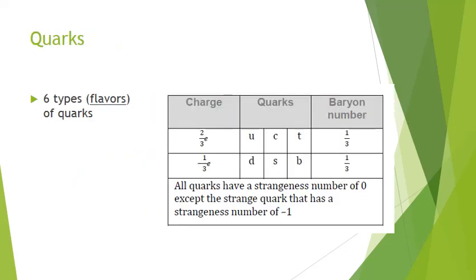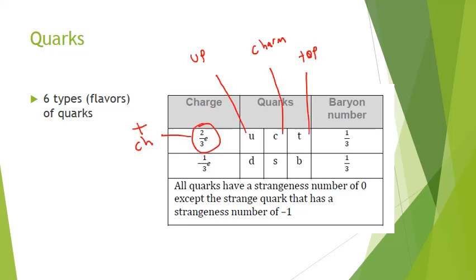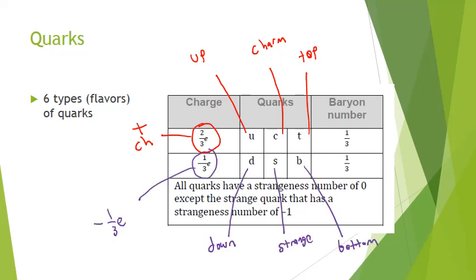On your equation sheet under the nuclear section — section 7.3 in the current curriculum — you actually have this table right in there, which is pretty awesome. There are six types of quarks: U (up quark), C (charm quark), and T (top quark), each with a charge of positive two-thirds E. Then the down quark, strange quark, and bottom quark, all with a charge of negative one-third E. Remember, E is the elementary charge, so one-third of that is one-third of the elementary charge.